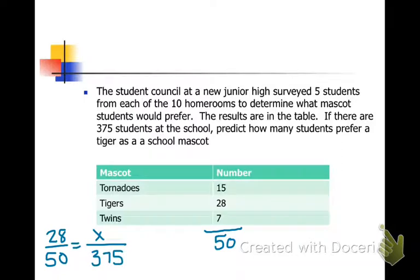In this case, we would solve the proportion. You take 28 times 375, divide by 50. We find that X is equal to 210. So about 210 students prefer the tiger.